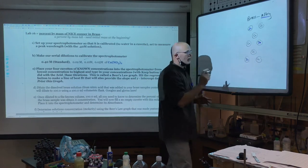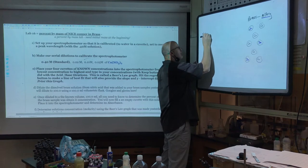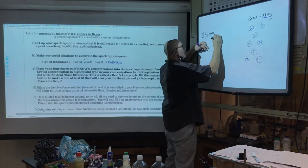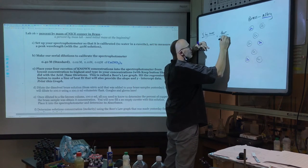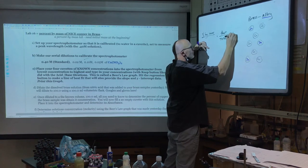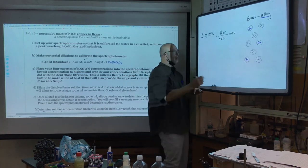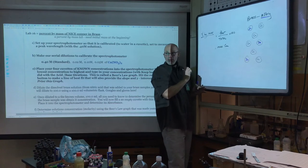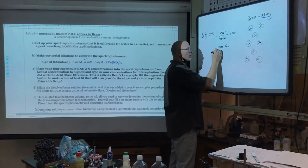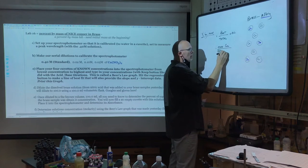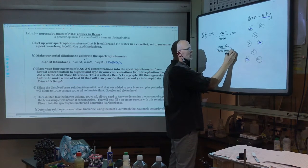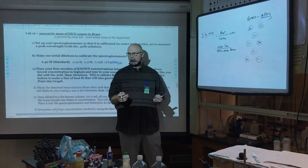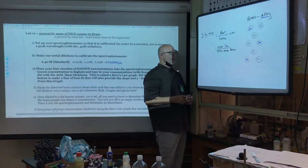Back to reality — we want to find the percent by mass of copper. Every time you hear percent by mass, think: part over total times 100. What we're after in this lab is the mass of copper in the crystalline structure over the total mass of the brass object. Our brass object is going to be brass shot — basically BBs made of copper and zinc.